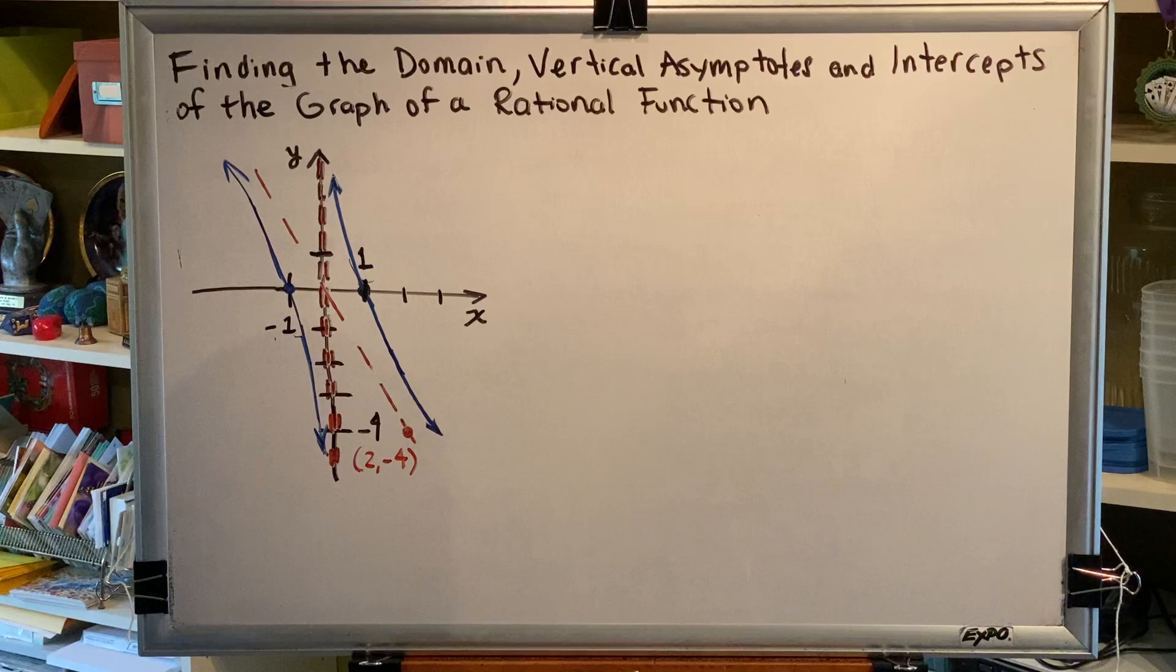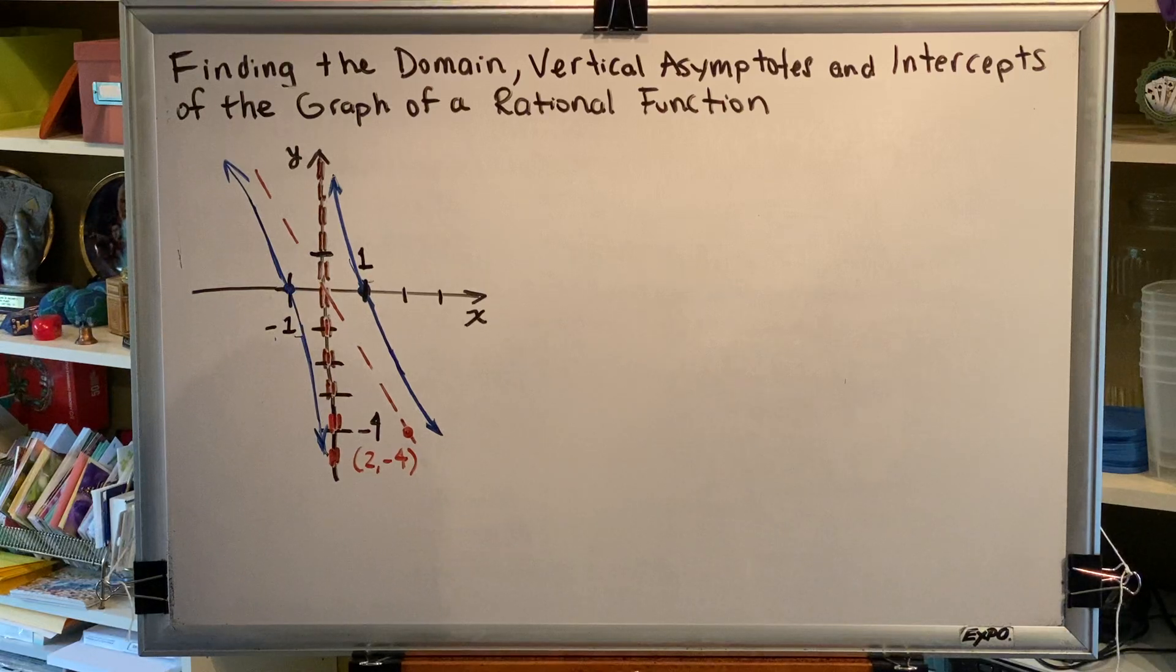So intercepts come in two flavors, x and y, and an intercept is a point from your graph that is on the x-axis or on the y-axis. The graph is being shown here in blue.